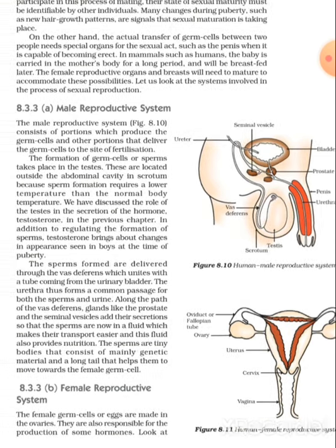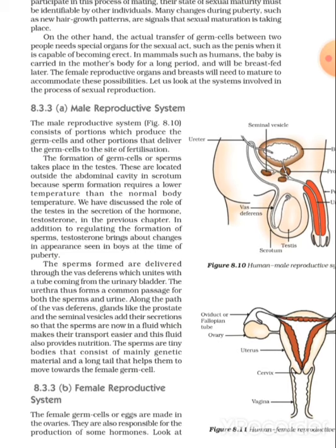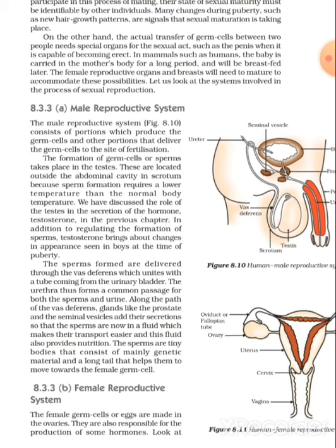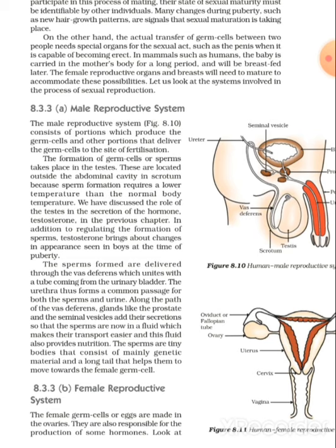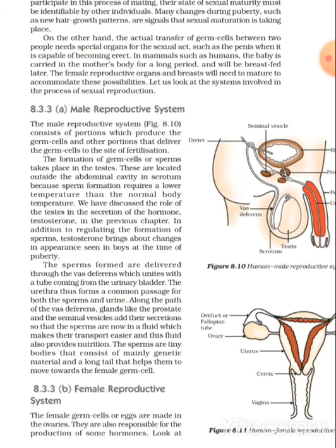The male reproductive system consists of a portion which produces the germ cells and another portion that delivers the germ cells to the site of fertilization. The formation of germ cells and sperm takes place in the testes. The testes are located outside the abdominal cavity in the scrotum because sperm formation requires a lower temperature than the normal body temperature.